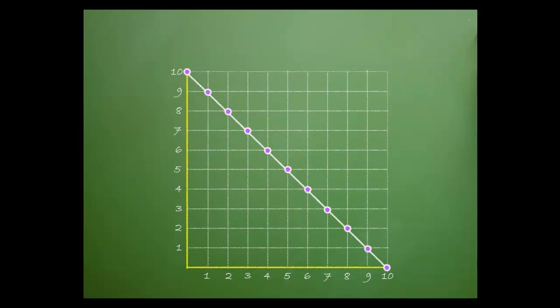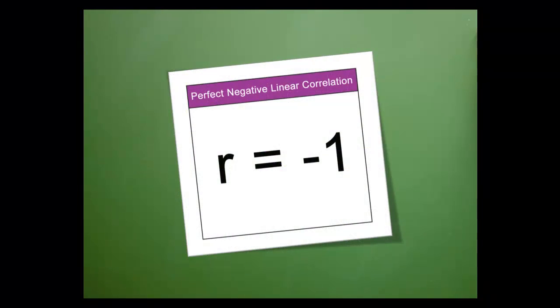Let's assume we've plotted x and y data on a graph. In this example, note that the line goes through every data point, creating a perfect line. Also notice that the slope is negative. When both of these occur, we have a perfect negative linear correlation. Data that has a perfect negative linear correlation has an r value of negative 1.